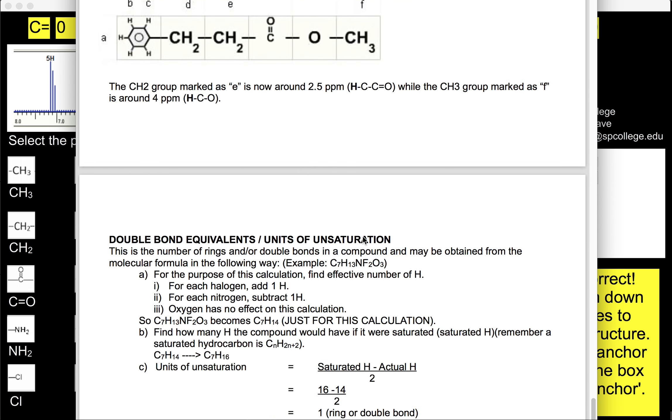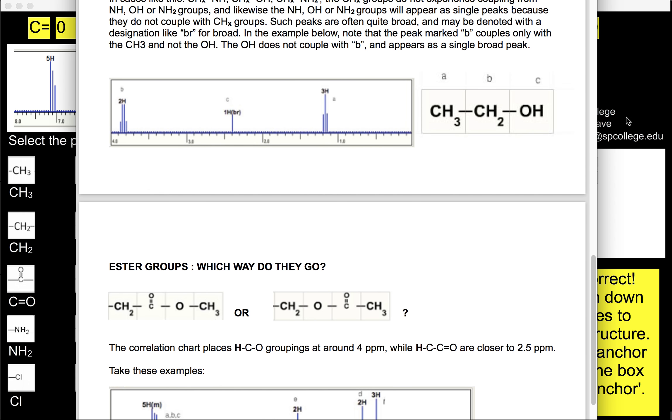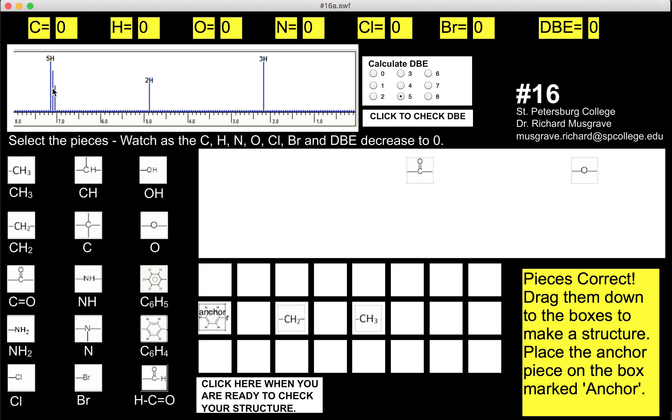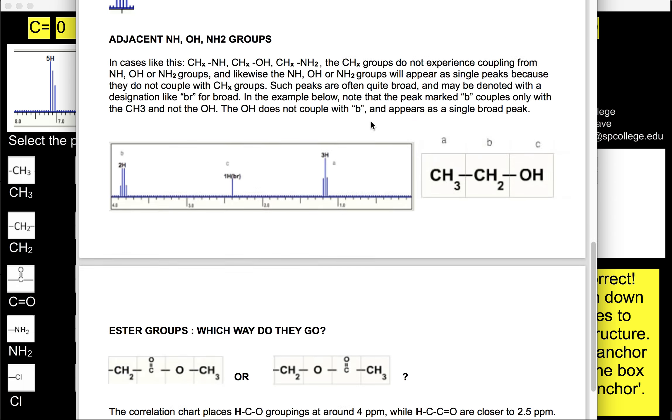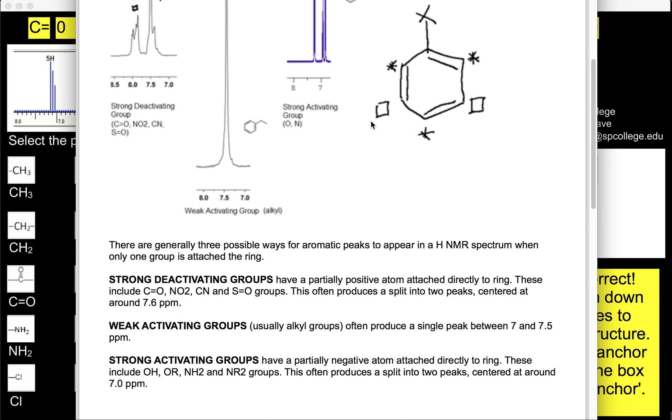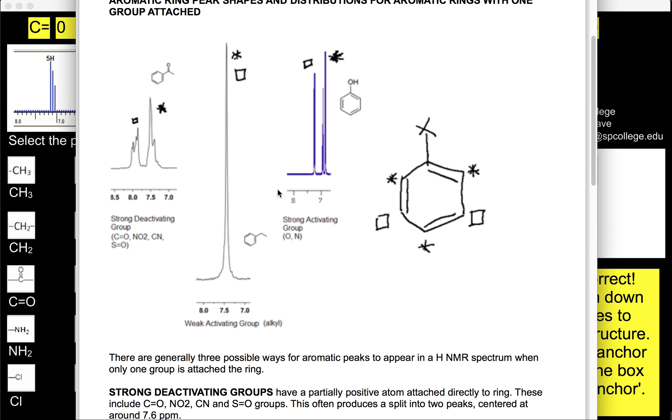We can also get another clue as well by looking at the structure. Let's go back to this. You can see here that we've got just sort of a single grouping of peaks for the aromatic region. This actually tells us something as well. And if you look at the possibilities for how the aromatic ring looks, depending upon what's attached to it,